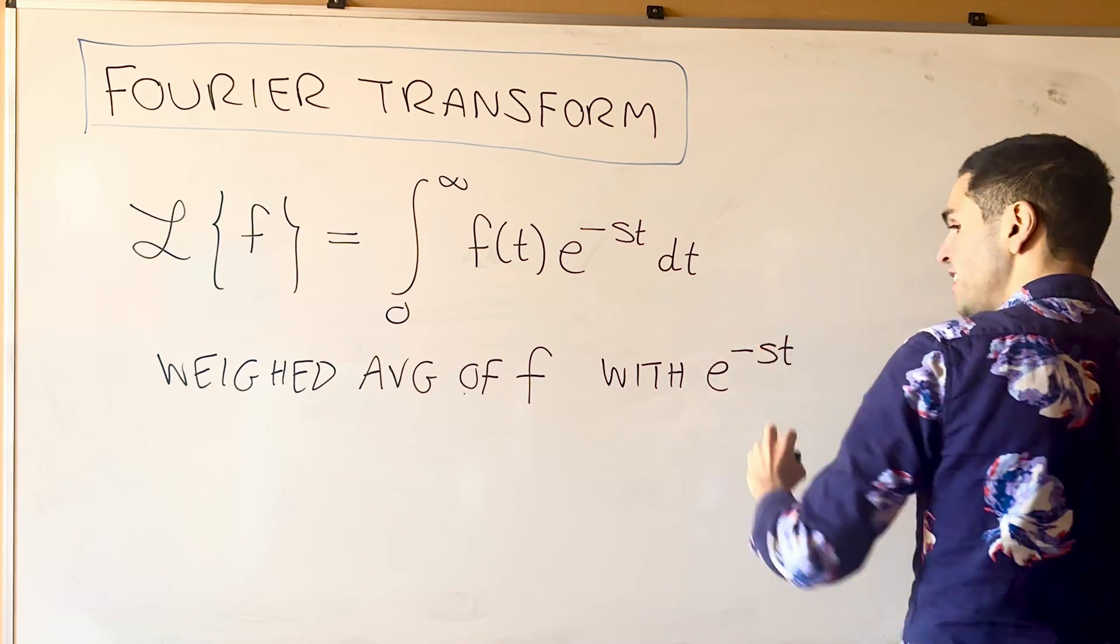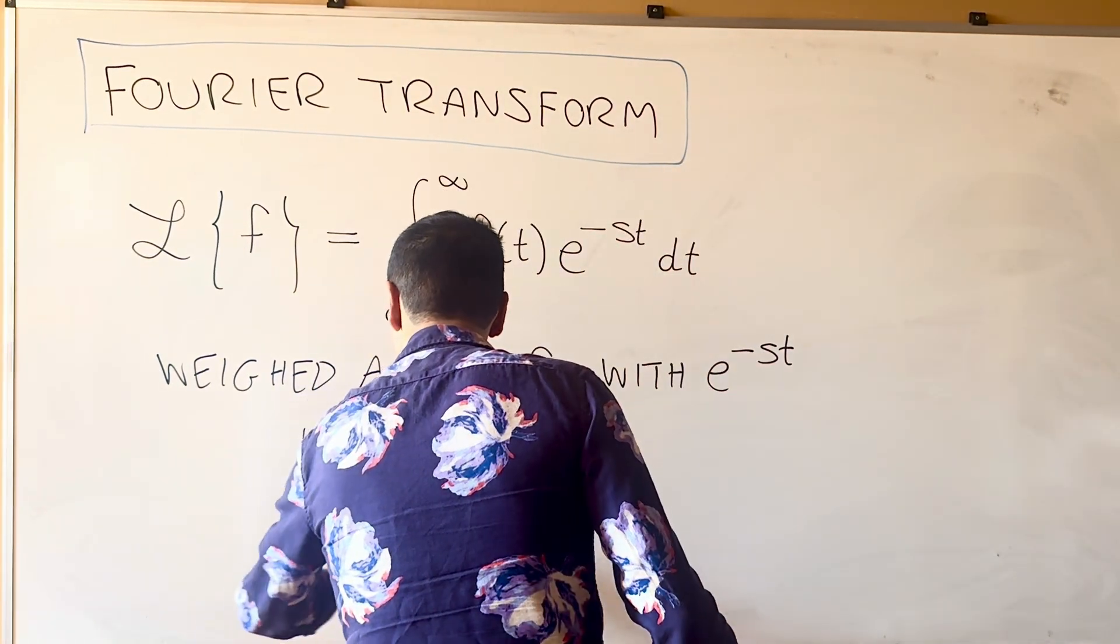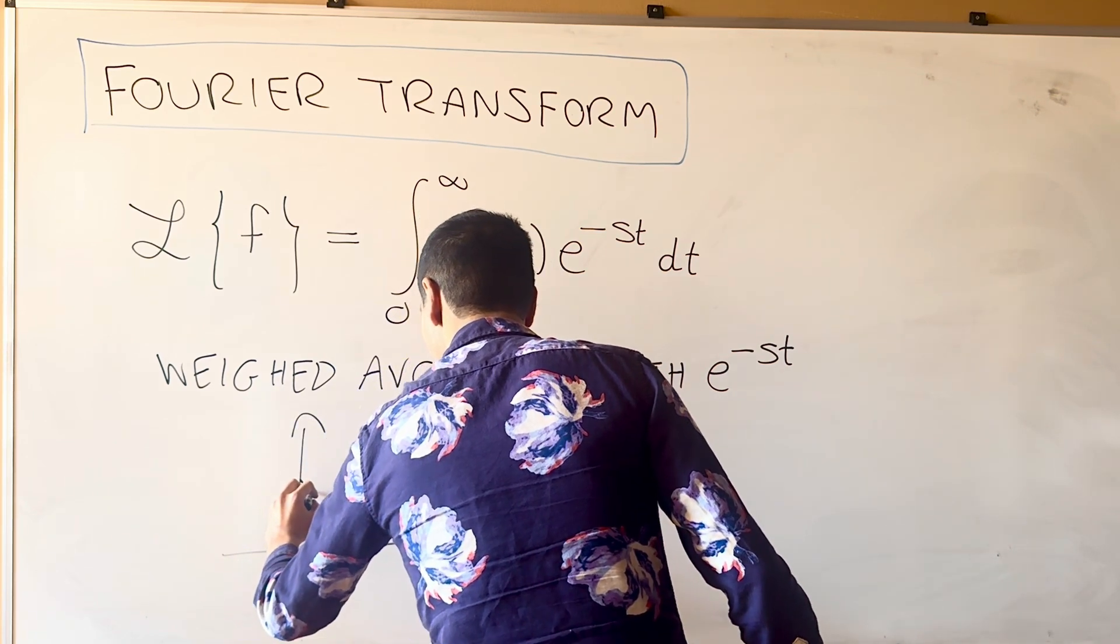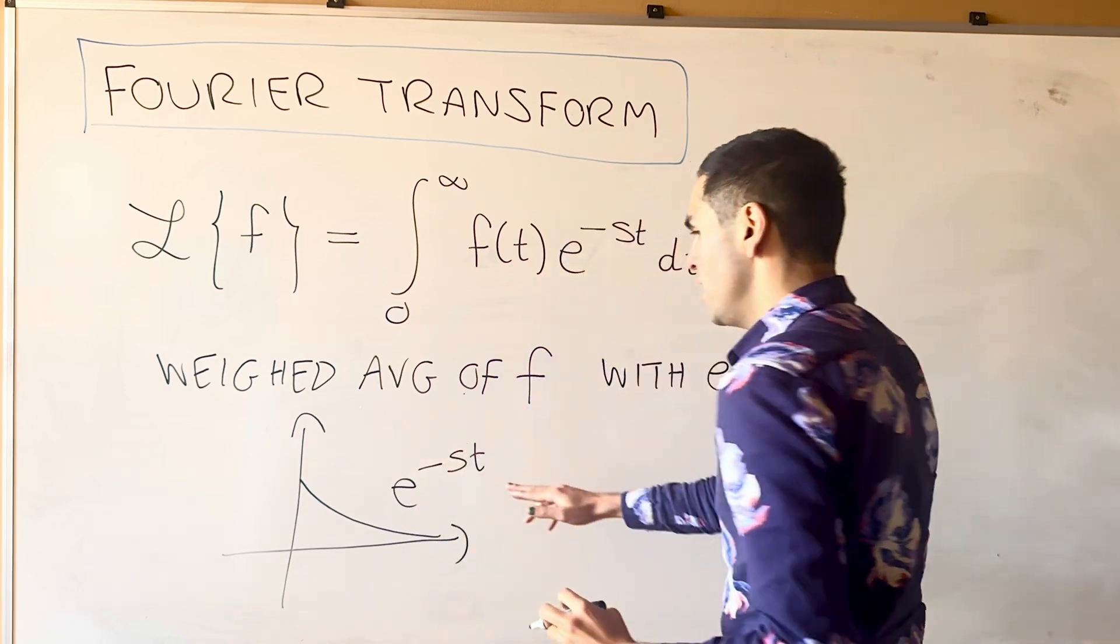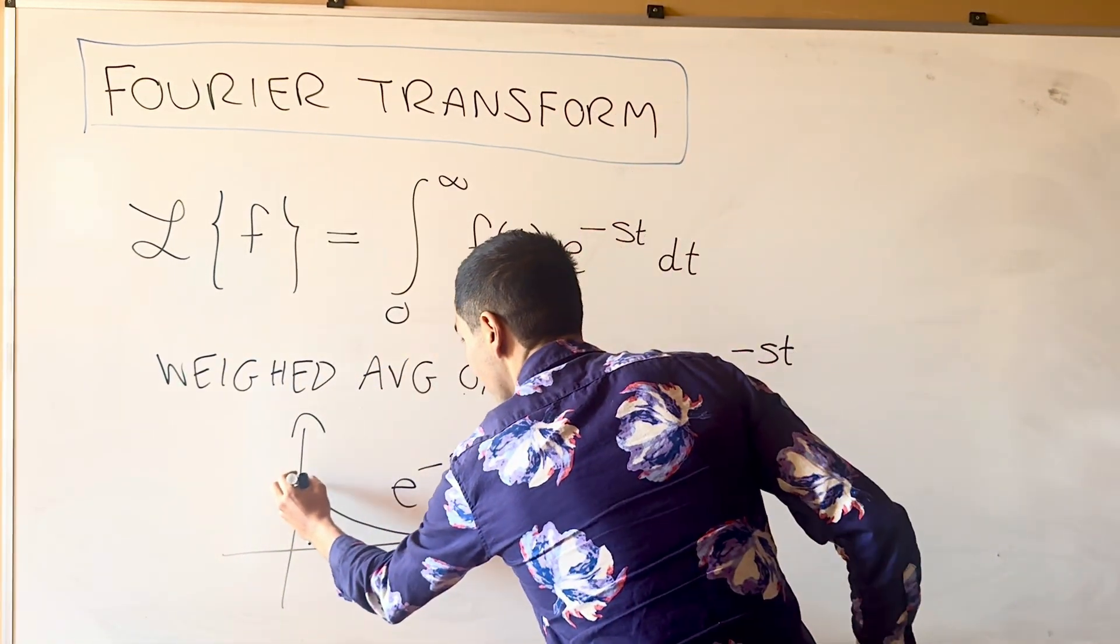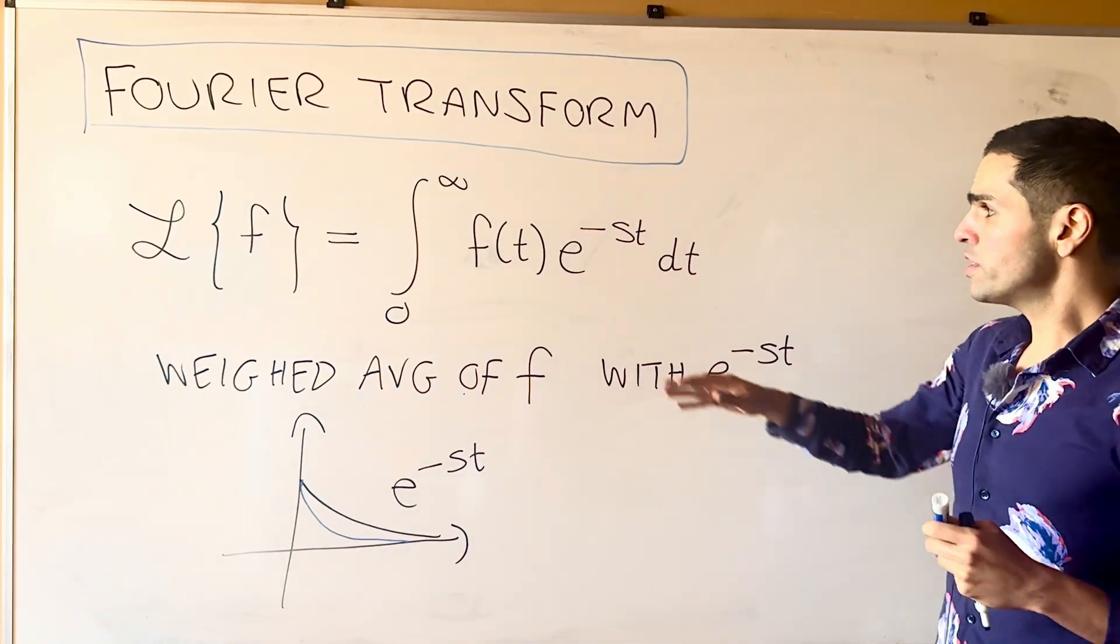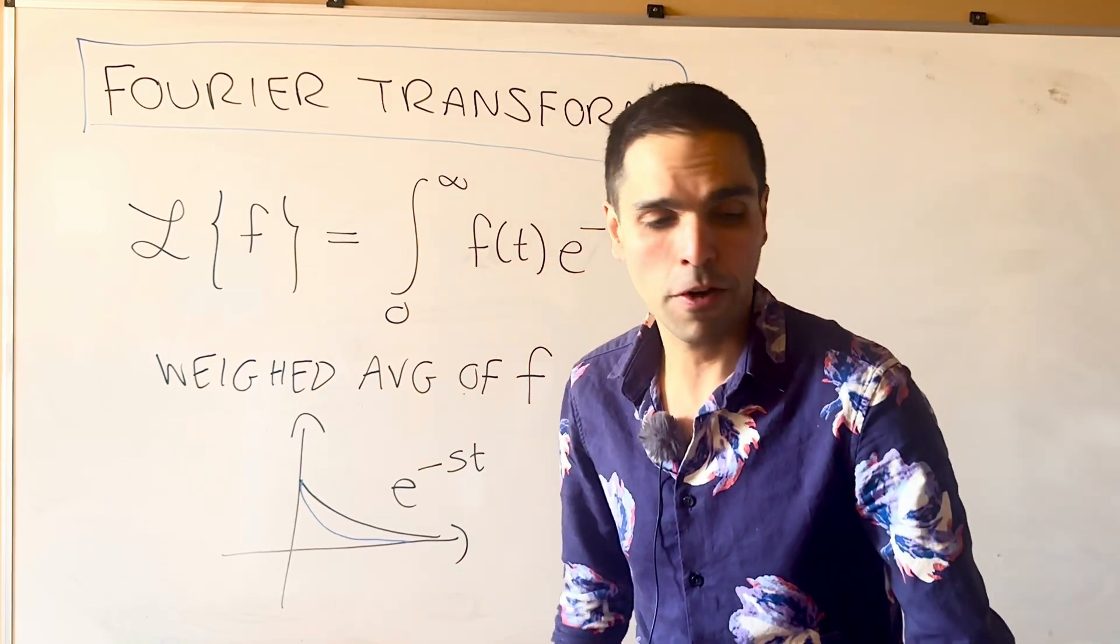e to the minus st, which I would like to remind you, those are functions that are just exponential that just go down. So, this is e to the minus st, maybe for small s, but for large s, it looks tamer and tamer. So, you're just taking an average of f with those functions that get tamer and tamer.